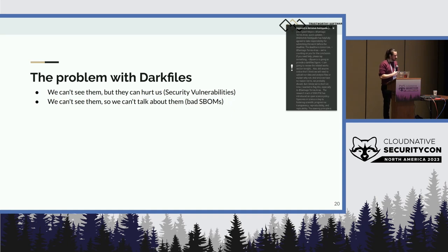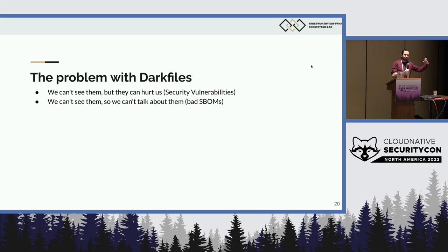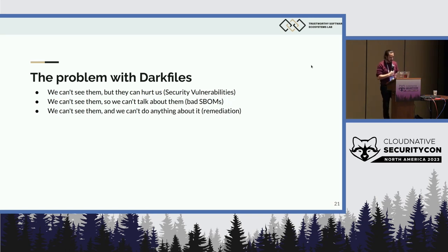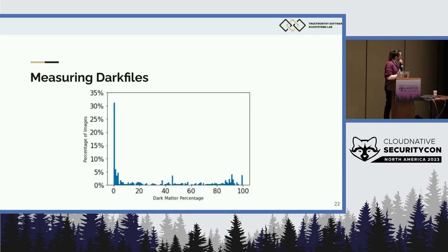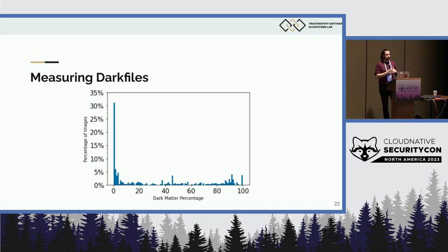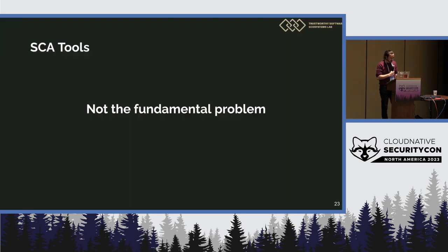We can see them, so we cannot produce an SBOM that faithfully represents what's inside of a container. And we can't see them, so we cannot do anything about them. We don't have the tools to understand how these dark files affect the system, and we cannot take the appropriate steps to fix them. We went ahead and measured how these dark files appear in the Docker Hub ecosystem, and we found that it's actually very widespread — it's a problem in the ecosystem, and it affects software transparency.